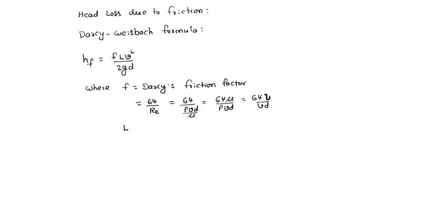L equals length of pipe, V equals velocity of flow, D equals diameter of pipe.